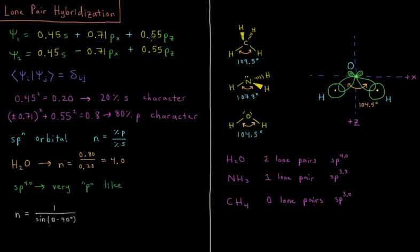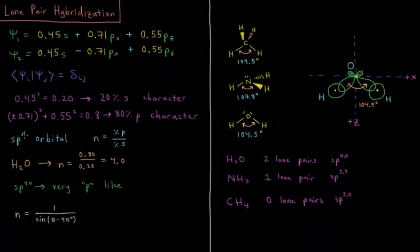Then for px and pz, 0.71—well, plus or minus 0.71 squared plus 0.55 squared gives us 0.8, or 80% p character.